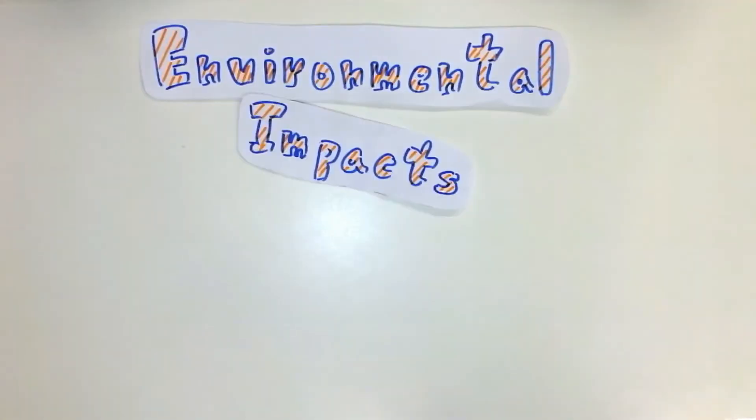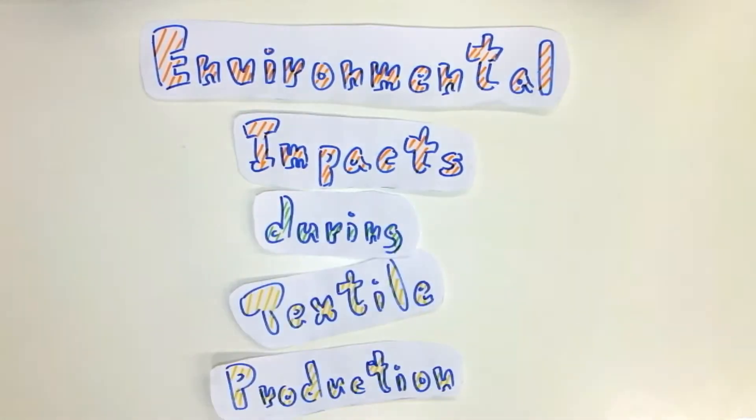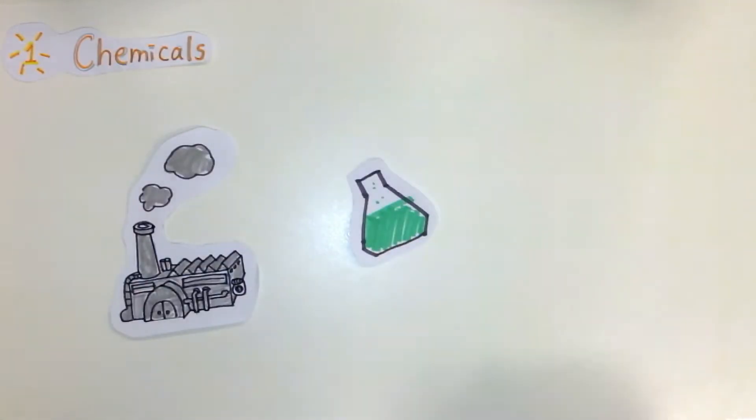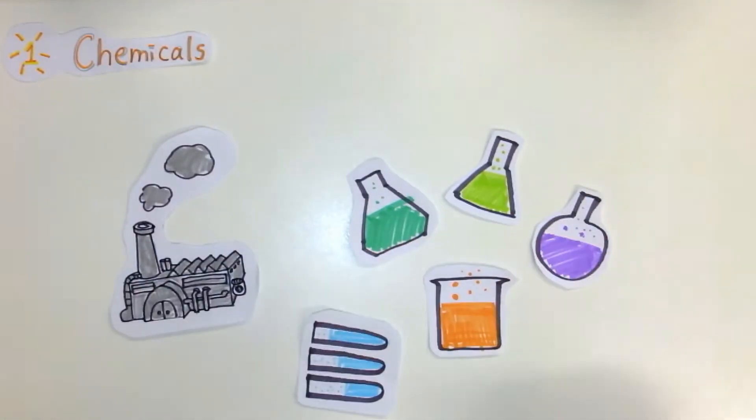There are four environmental impacts in the textile production processes. The first one is chemical pollution. During the manufacturing processes, there are an abundance of chemical reagents used.